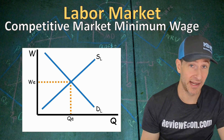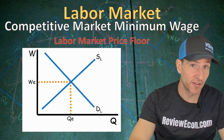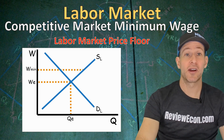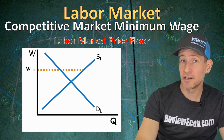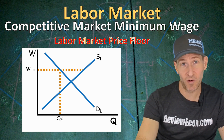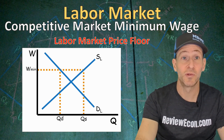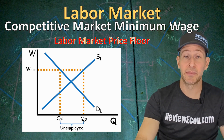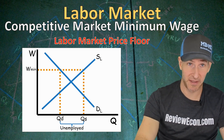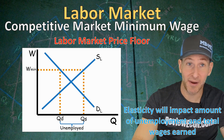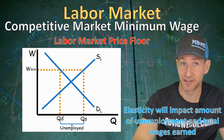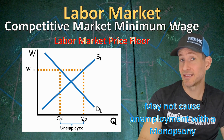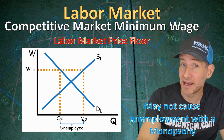Next, let's look at the impact of a minimum wage on a competitive labor market. A minimum wage is a price floor for a wage, so if it's effective or binding, it will go above the equilibrium wage. At a higher-than-equilibrium wage, the quantity of workers demanded by businesses will be less than the equilibrium quantity, while the quantity of workers willing to work at that higher wage will be greater. The gap between quantity supplied and quantity demanded represents unemployed workers. So minimum wage in a competitive labor market could cause some unemployment, and the amount depends on the elasticity of supply and demand — which also affects total wages earned. This may not hold true for monopsonies, a non-competitive labor market.